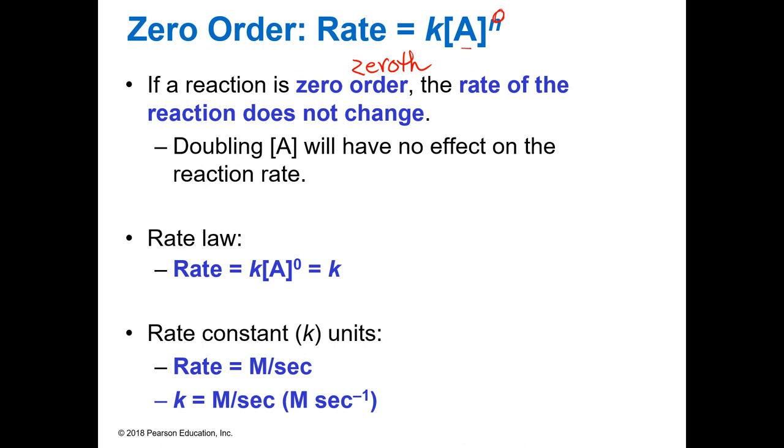Because if I double the concentration, one times that to the zero power is what? One. Anything to the zero power, like N to the zero, is one. N to the first is whatever N was. N to the second is N squared. So if this was one, and I doubled it, times two, two to the zero is still one. So I'm not going to change anything by doing that.